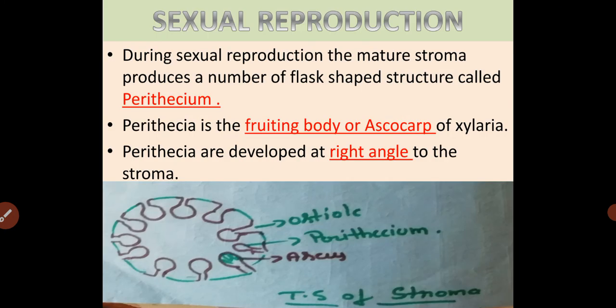Sexual reproduction: During sexual reproduction, the mature stroma produces a number of flask-shaped structures called the perithesium. This perithesium is called the fruiting body or ascocarp of Xylaria. The perithecia are developed at right angles to the stroma.